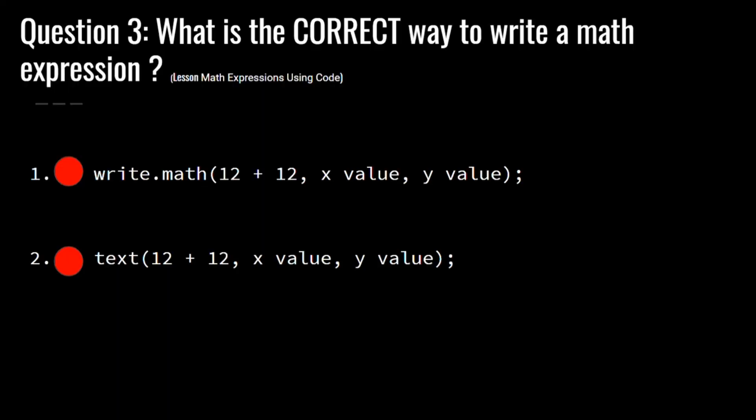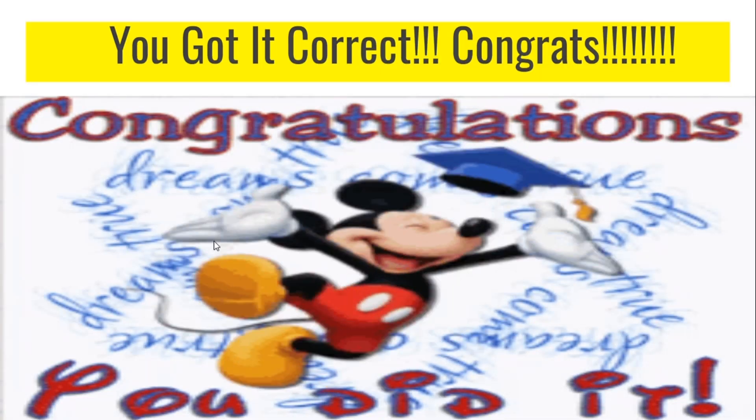Now I will be asking you a tricky question. Make sure you get it right. Question 3: What is the correct way to write a math expression? This is from the lesson math expression using code. Is it number 1? Write dot math followed by parentheses, the expression and then the x value and the y value. Or is it number 2? Text and then between the parentheses you type in the expression, then x value and the y value. This is really kind of tricky, but I think it's number 2. Alright, let's check. Good job! You got it correct!